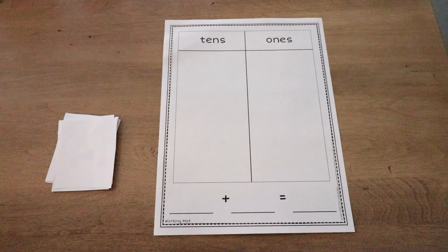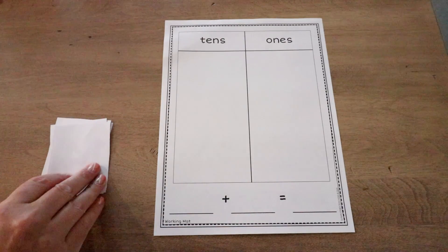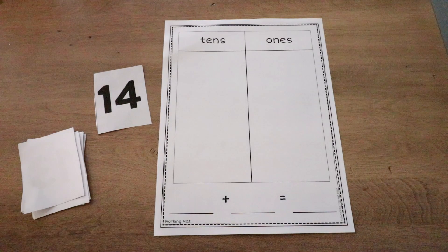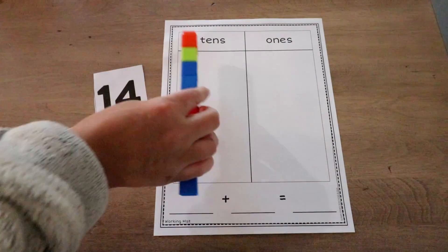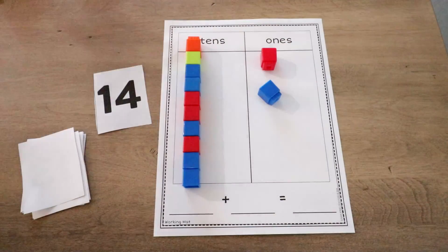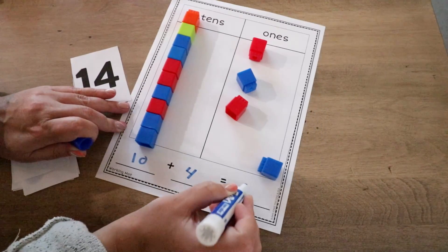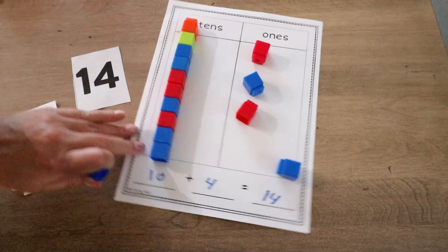Once students have done this enough times with you saying the number and building it — so you can walk around and check — I would definitely move this into an easy independent or partner center. Here's an example of an independent center I have in the SJT Math Club. It's called Teen Number Build and Write. Students flip a teen card, build it on their mat using connecting cubes or rods, and then write the equation underneath — so 14 is 10 plus 4. This takes it to the next level where they can actually see the equation 10 plus 4 equals 14.